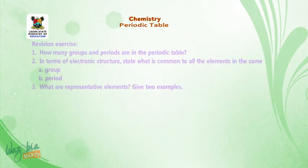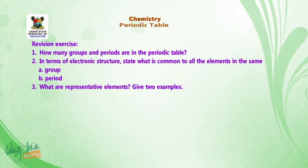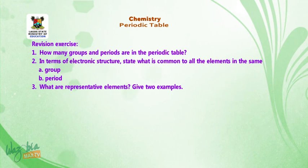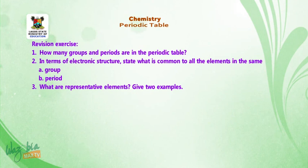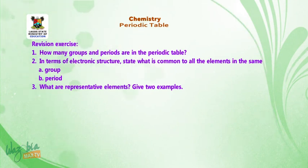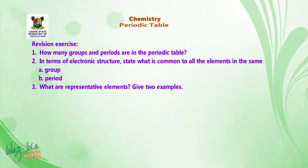Revision exercise. Number 1: how many groups and periods are in the periodic table? Number 2: in terms of electronic structure, state what is common to all the elements in the same (A) group and (B) period. Number 3: what are representative elements? Give two examples. Thank you. Stay safe and keep learning.